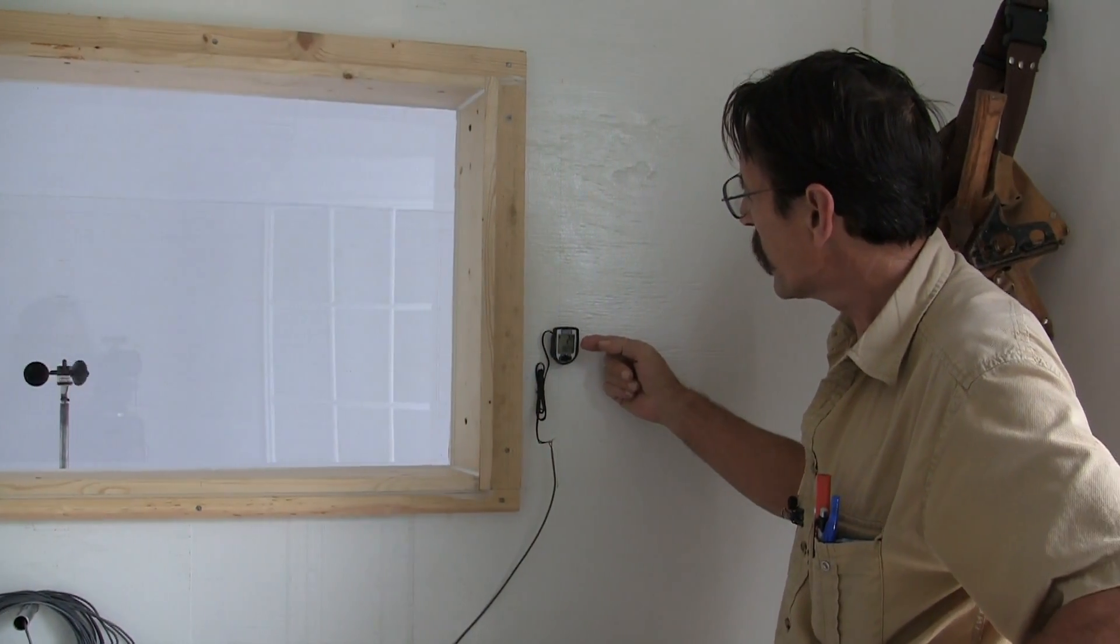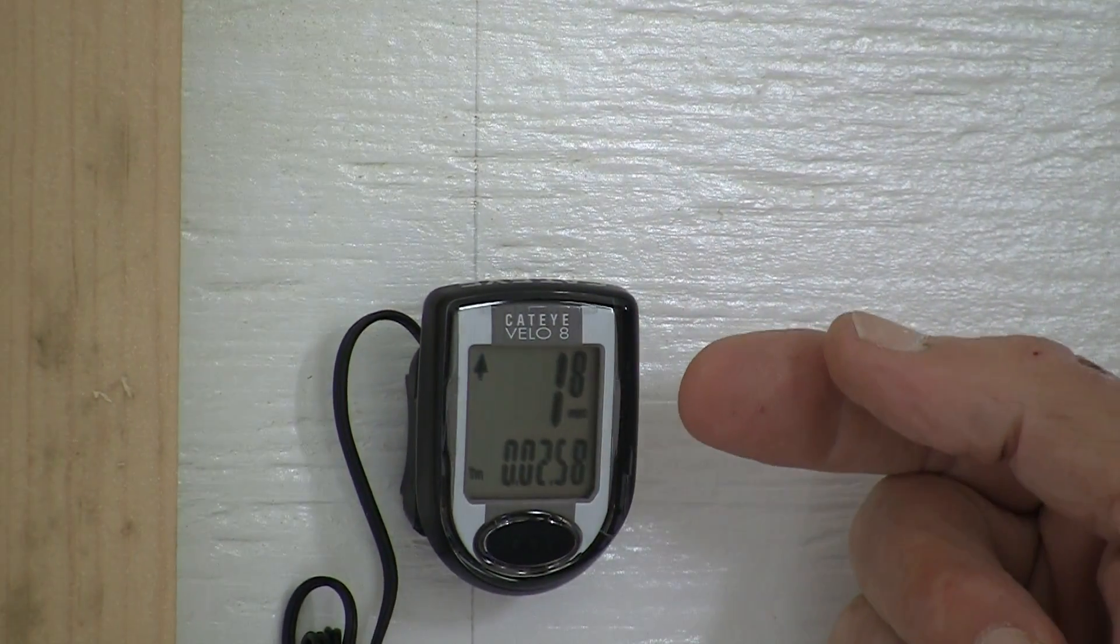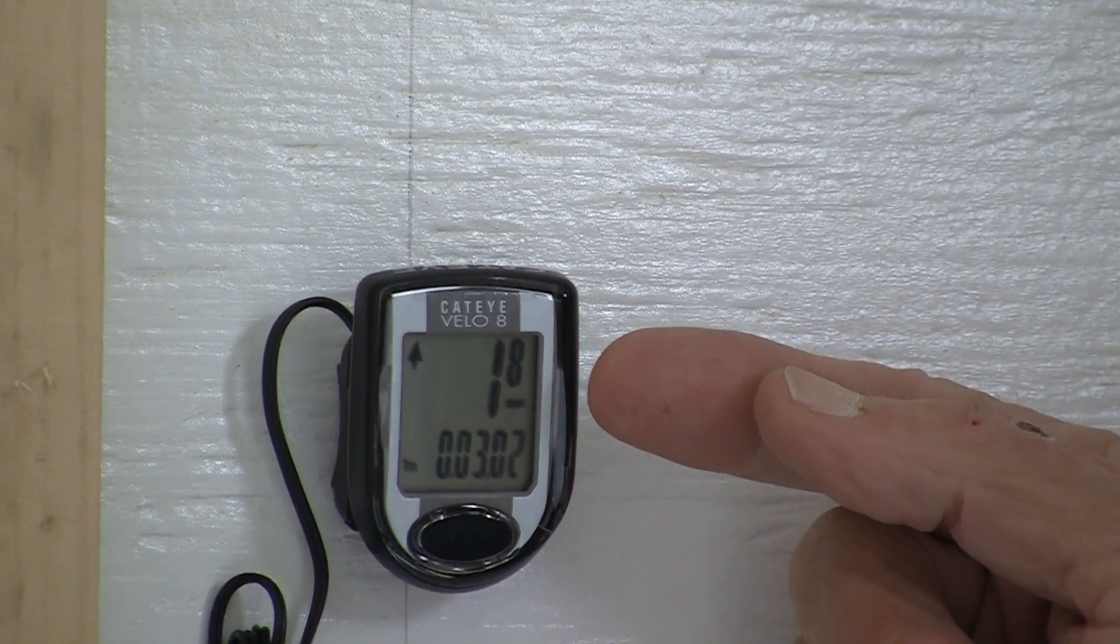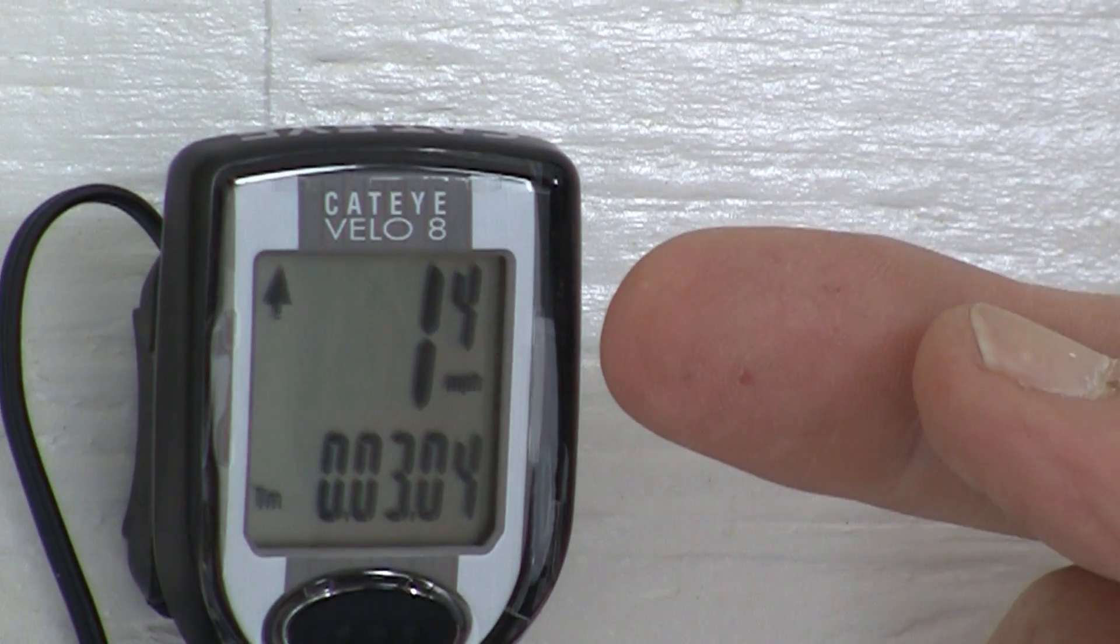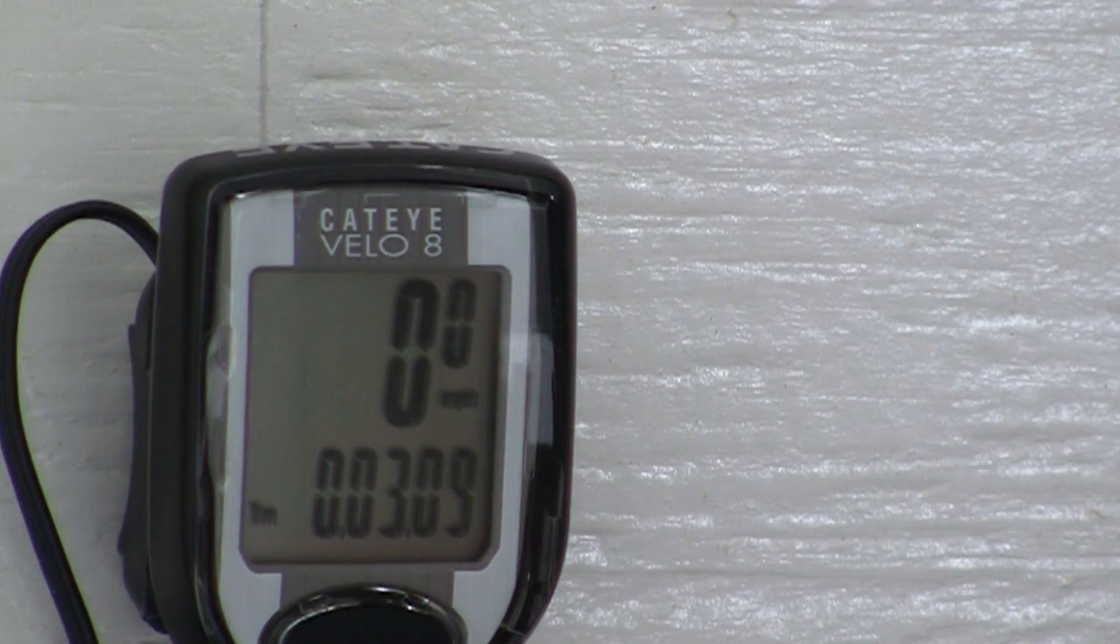Now come on over here and look at the meter. It's a vortex anemometer, wind anemometer, and it's reading 1.8 miles per hour. Now it's down to zero.